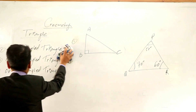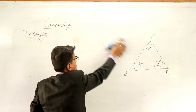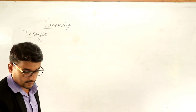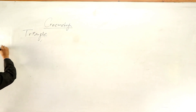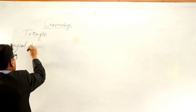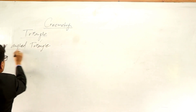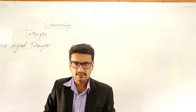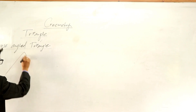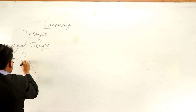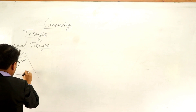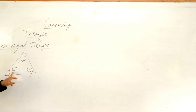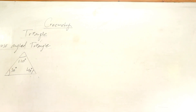Obtuse angle triangle: in a triangle, three angles are there. Among the three angles, if any one angle is greater than 90 degrees, in that condition we say it is an obtuse angle triangle. For example, suppose this is 110 degrees, 30 degrees, and 40 degrees. One angle is 110 degrees, which is greater than 90. In this situation we say this is an obtuse angle triangle.